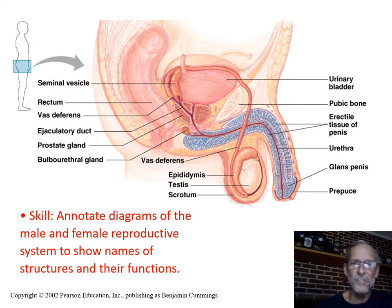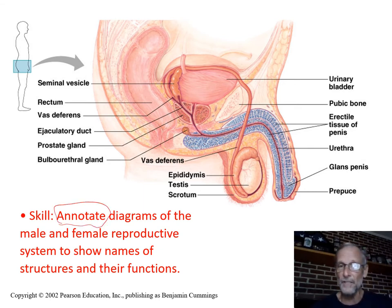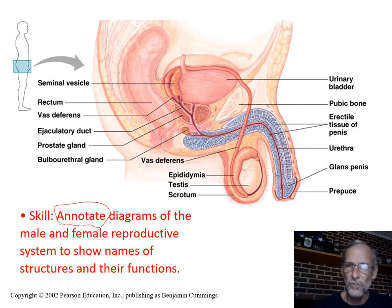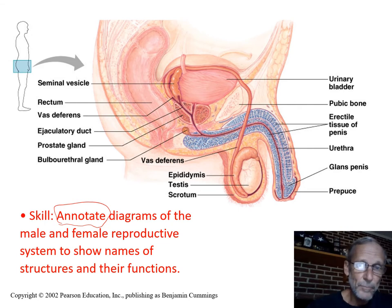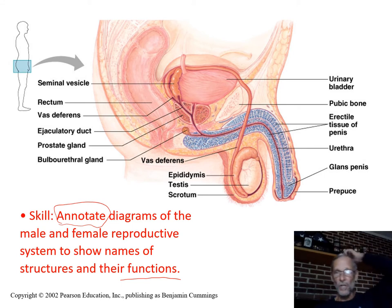On the test you may need to annotate a diagram — this is one I've seen very often. It's going to be either the male or female reproductive system. Very often on a test you get one of those two and you're asked either to annotate it or they have letters A, B, C, D pointed to parts and they want to know the function of those particular parts.